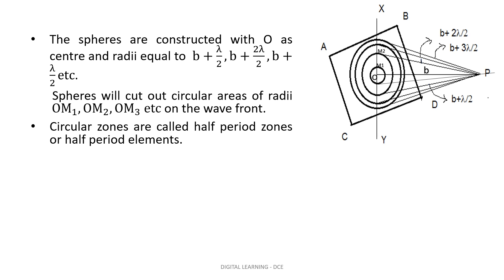Each point in these areas produces secondary wavelets which move towards point P. The circular region with radius OM1 is the first half period zone. Draw a normal from the first half period zone to point P, that is a line from M1 to P. The portion between the first circle and second circle is called the second half period zone, and the area between the second circle and third circle is the third half period zone, and so on. Similarly, draw lines from M2 to P, M3 to P, and so on. The Fresnel's half period zones are now constructed.